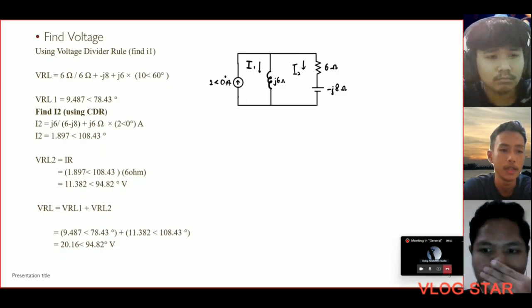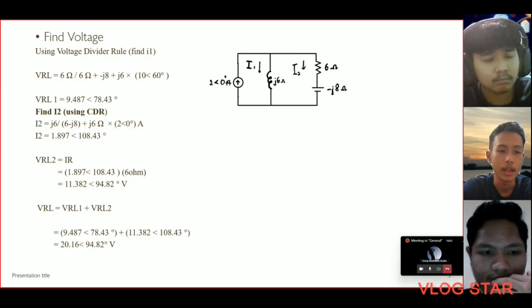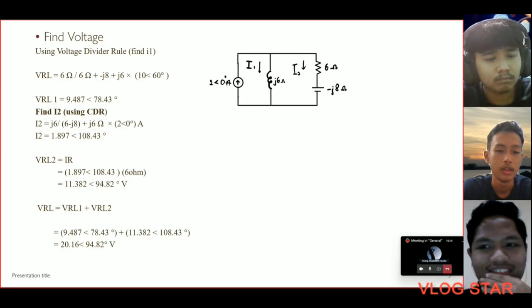To find VRL2, we use Ohm's law, that is V equals IR. And lastly, total VRL equals VRL1 plus VRL2, which equals 20.16∠94.82° voltage.